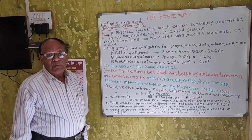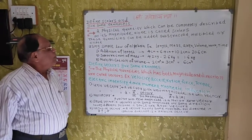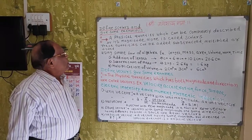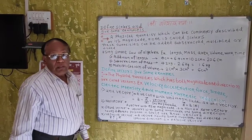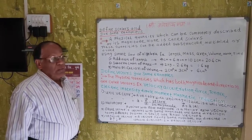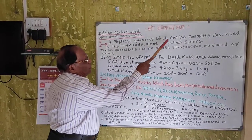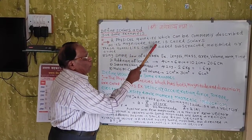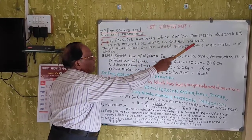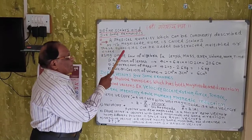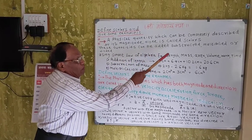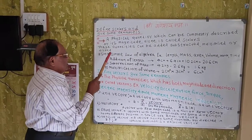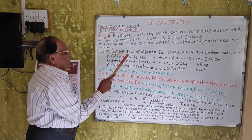Good evening students. Today we are going to learn about the definition of Scalars and Vectors. First, we are going to define Scalar Quantity. A physical quantity which can be completely described by its magnitude alone is called a Scalar. These quantities can be added, subtracted, multiplied, or divided by using simple laws of algebra.